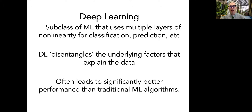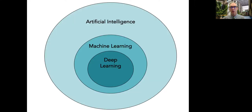Some of the other learners, like deep learning, present a black box that classifies very well but we don't know why — we can't get under the hood. Deep learning is a subclass of machine learning that uses multiple layers of non-linearity for classification and prediction. It disentangles the underlying factors that explain the data, and quite often leads to significantly better performance than traditional machine learning algorithms. The way I view it: artificial intelligence is the big field, machine learning is a subset within it, and deep learning is a subset within machine learning — like a nested doll with deep learning in the middle.